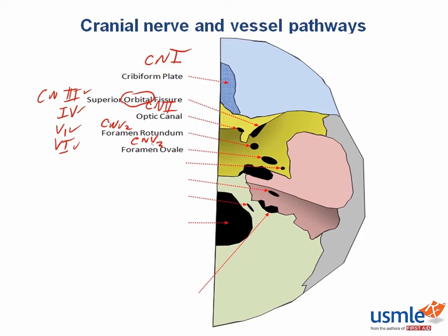You should note that cranial nerve V1, V2, and V3 pass through the skull in numerical order — 1, 2, and 3 — from anterior to posterior. One mnemonic that we suggest is that divisions of cranial nerve V exit owing to standing room only. So: superior orbital fissure, then rotundum, then ovale.